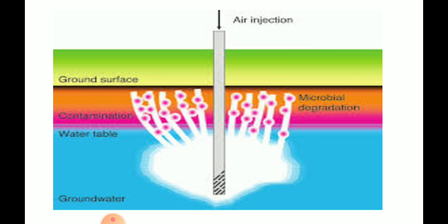Next is the injection method. Wherever the groundwater has been contaminated, microbes can be released through injection into the groundwater so that the microorganisms degrade the pollutants and we can get clean groundwater.